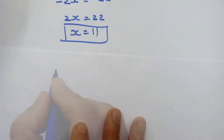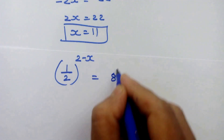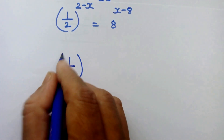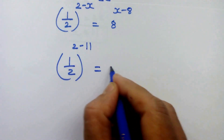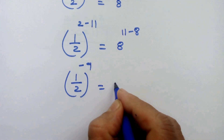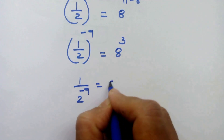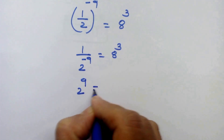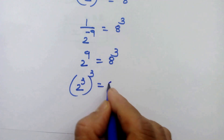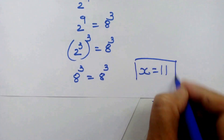Now let's check our answer. Our question is 1 upon 2 whole raised to 2 minus x is equal to 8 raised to x minus 8. Let's put x equal to 11. So 1 upon 2 whole raised to 2 minus 11 is equal to 8 raised to 11 minus 8, giving us 1 upon 2 whole raised to minus 9 is equal to 8 cubed. We can write this as 2 raised to 9 is equal to 8 cubed, which gives us 8 cubed is equal to 8 cubed. So x equal to 11 is the correct answer.